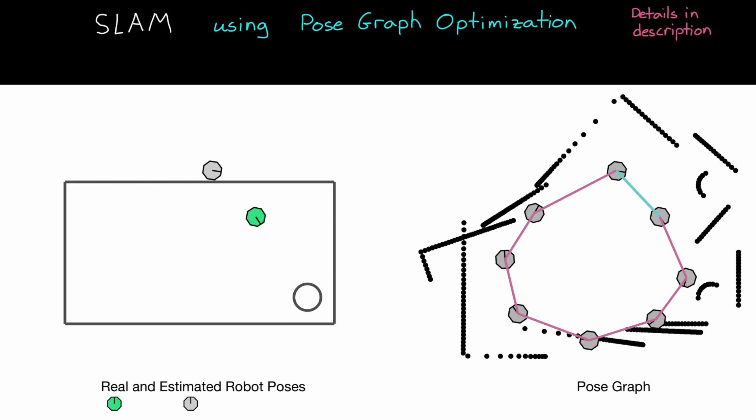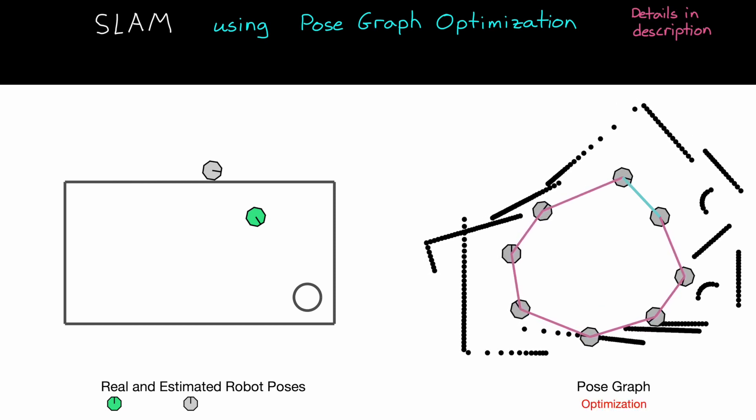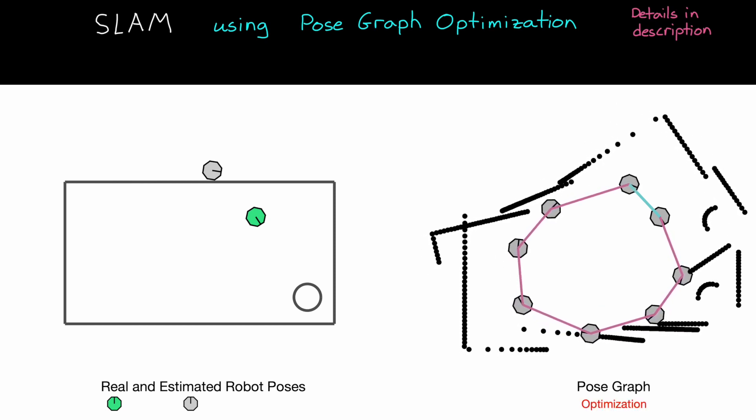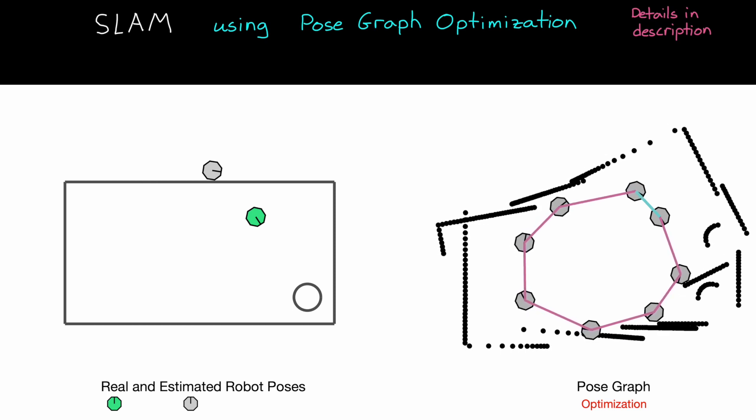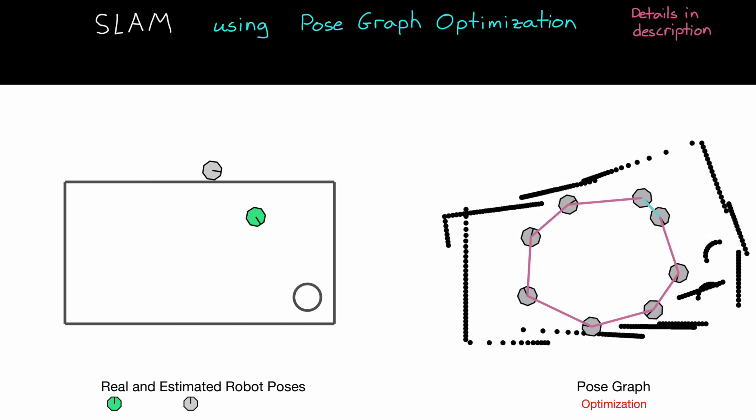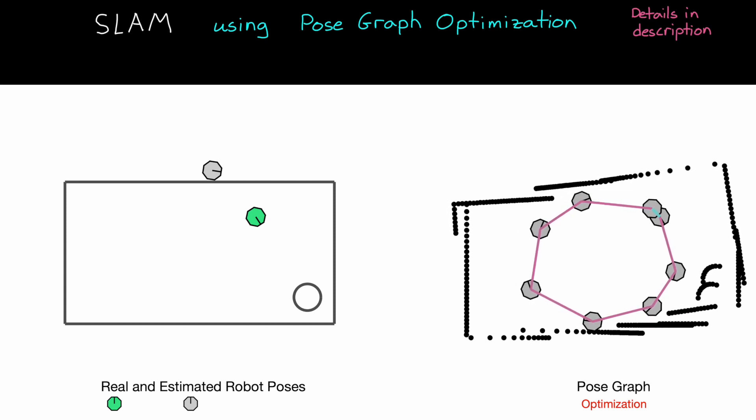So hopefully you can start to see that a loop closure is the thing that makes all of this work. Without a closure, all of the constraints were just happily being met. But with a loop closure, we have a way to inject tension into this graph. The blue bar wants to pull those two nodes together, and the purple bars all want to keep the relative distances the way that they are. And so allowing this graph to settle to equilibrium, or to balance all of the forces that each of the constraints are imposing, is the optimization part of pose graph optimization.